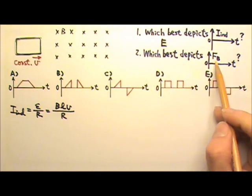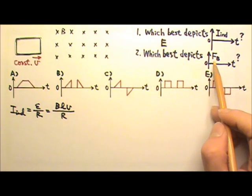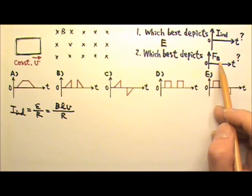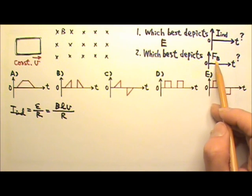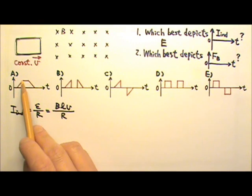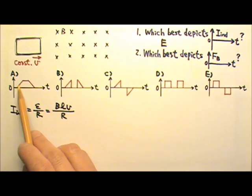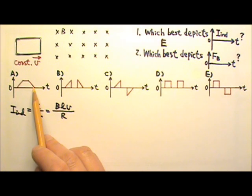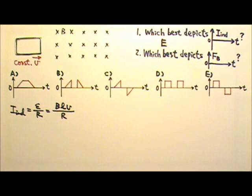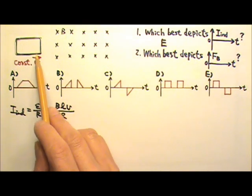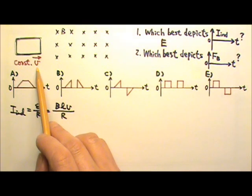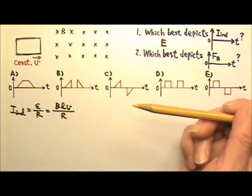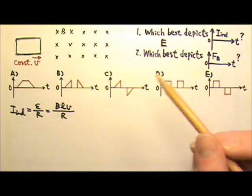Number two: for magnetic force, that's the magnetic resistant force. We only have magnetic resistant force when the flux is changing. So again, we only have magnetic resistant force while the loop is entering the magnetic field and while the loop is exiting the magnetic field. Because it's a magnetic resistant force and the loop keeps moving to the right, the magnetic resistant force has to be leftward every time.